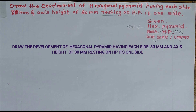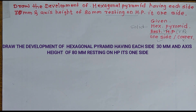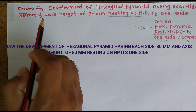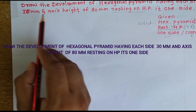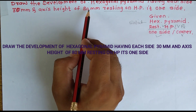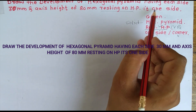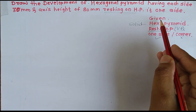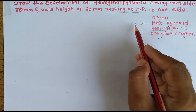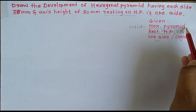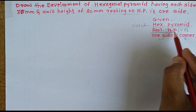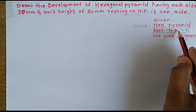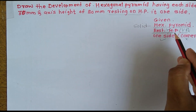Hello friends, today we will see the tutorial on the development of hexagonal pyramid. In the problem statement, they have given: draw the development of hexagonal pyramid having each side of 30 mm and axis height of 80 mm, resting on HP on its base, with one of the base sides on HP.